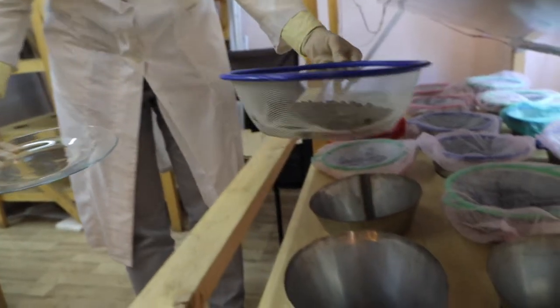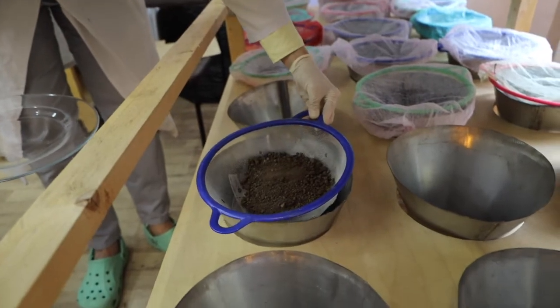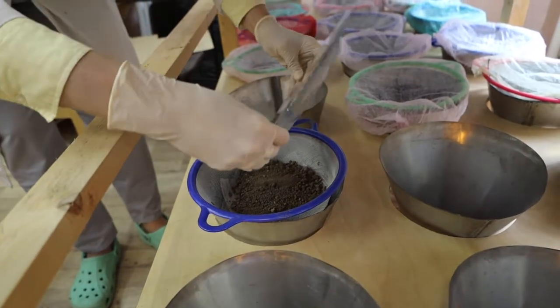Now, we gently place the sieve with soil and litter on top of the funnel. Don't forget to check the labels and ethanol.